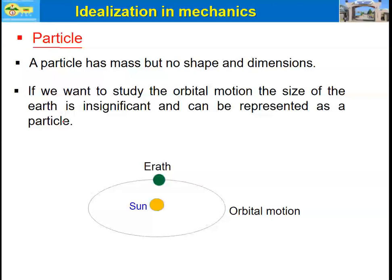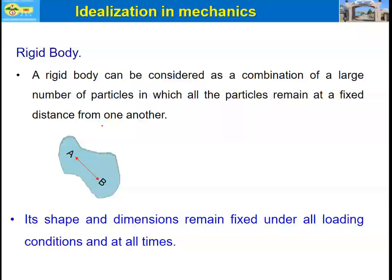For instance, if we want to study the orbital motion of the Earth, the size of the Earth is insignificant and can be represented as a particle. Imagine how large the Earth is, but compared to its orbital motion, the size of the Earth is very small. In this case we represent the Earth as a particle, simplifying the complicated problem.